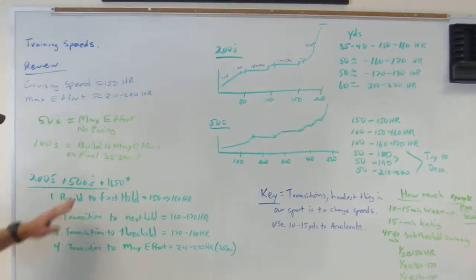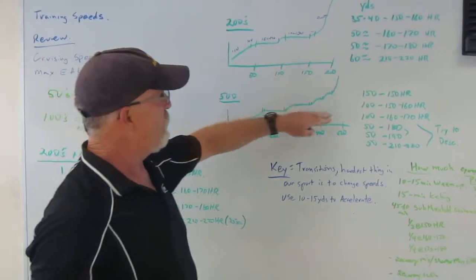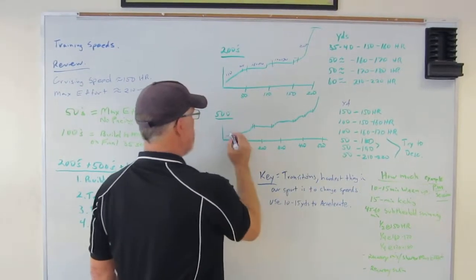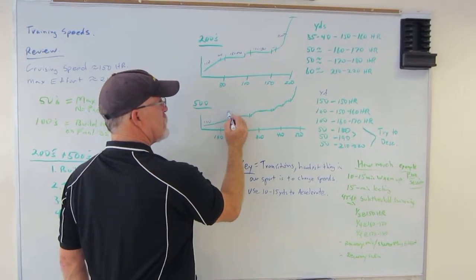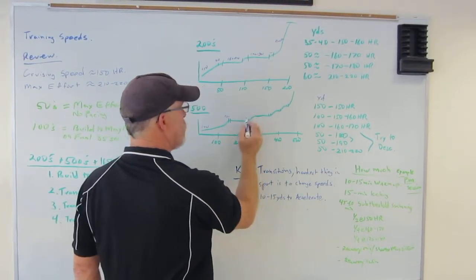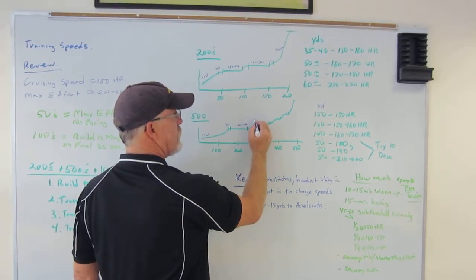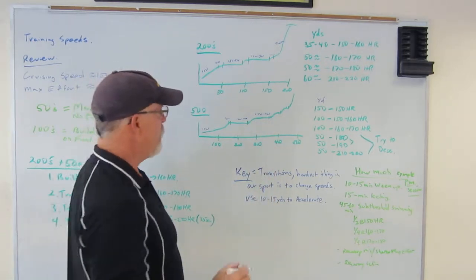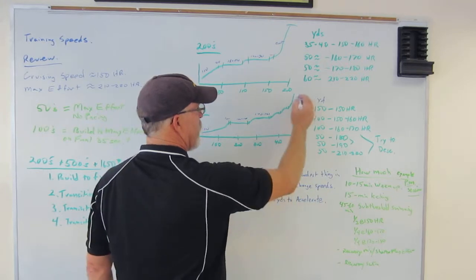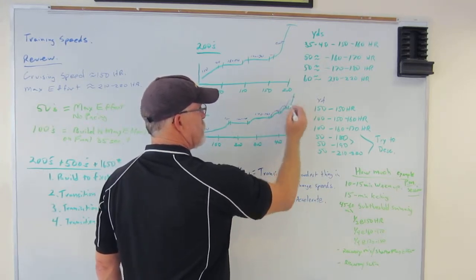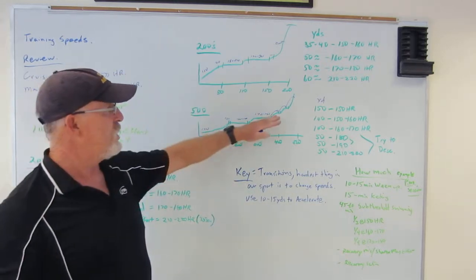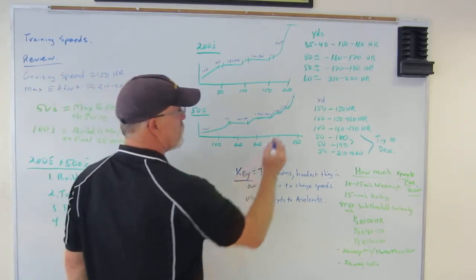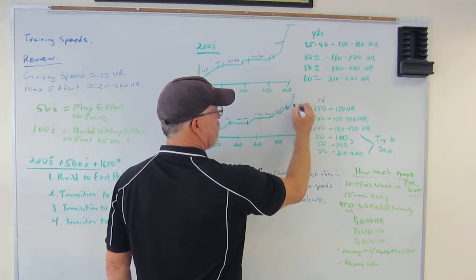Same thing applies to the 500, except just a little bit different. With the 500, you're looking at maybe the first 150 yards at 150 heart rate to finish up about 160. And then another 100 now at 160 to 170. Another 100 at 170 to 180. And then what I like to see in a 500 on your final transition to max effort, you actually try to do it over the final 150s. So it makes it a little bit more complicated. And you're trying to race and you gamble a little bit on your effort levels with the 150 to go. But you still don't go into that final sprint phase until your final 35 seconds.